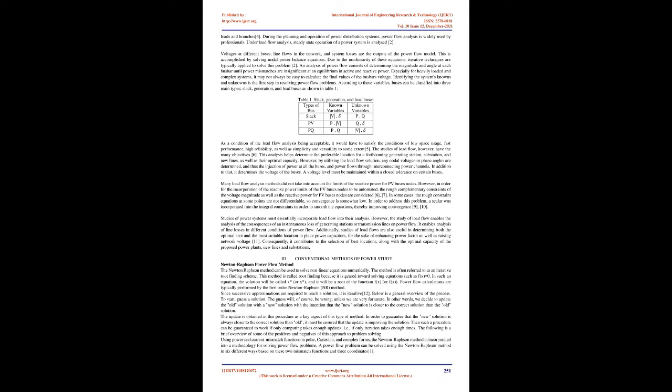Below is a general overview of the process. To start, guess a solution — the guess will, of course, be wrong unless we are very fortunate. We update the old solution with a new solution with the intention that the new solution is closer to the correct solution than the old one. The update must be improving the solution to guarantee that the new solution is always closer to the correct solution. Such a procedure can be guaranteed to work if only iteration takes enough times. The following is a brief overview of some of the positives and negatives of this approach.